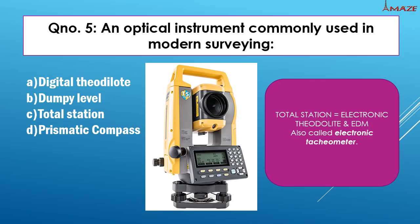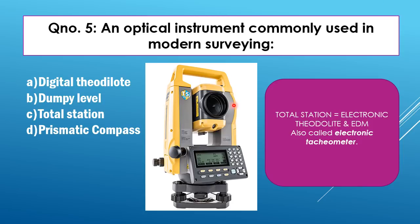Fifth question: An optical instrument commonly used in modern survey. In modern surveying, the Total Station is commonly used. Total Station is a combination of an electronic theodolite and EDM. The answer is option C, Total Station.